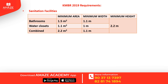Comparing MBC, KMBR dimensions: For the bathroom — minimum area is 1.8 square meters (KMBR: 1.5 meters width, MBC: 1.2 meters width). For the water closet — minimum area is 1.1 square meters, width is 0.9 meters (MBC: 1 meter). For combined bath and WC — minimum area is 2.8 square meters (MBC: 2.2 square meters), minimum width is 1.2 meters (MBC: 1.1 meters), and minimum height is 2.1 meters (MBC: 2.2 meters).